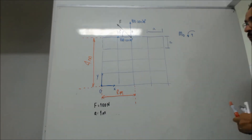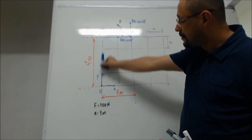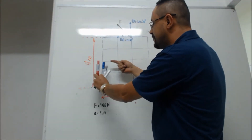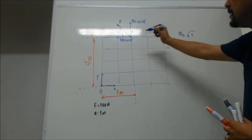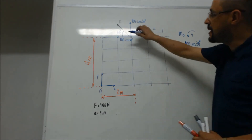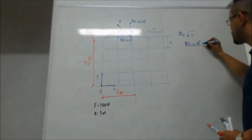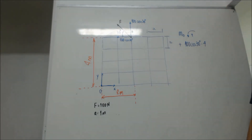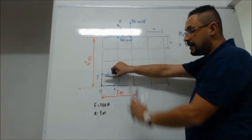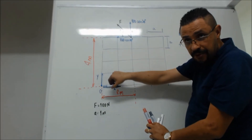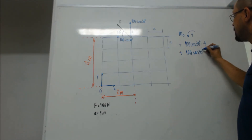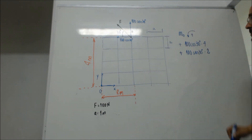Então, olha bem. Pega o ponteiro do relógio, coloca preso no ponto. Pega a força agora e tenta girar o ponteiro do relógio. O que ele vai fazer com o ponteiro do relógio? Girar no horário ou no anti-horário? Anti-horário. Sem cosseno de 30. Vê-se a distância dela — qual é a distância dela? Quatro metros. E ela é positiva porque está girando anti-horário. Pega o ponteiro do relógio de novo, preso aqui. A força agora é essa. O que ela vai fazer? Anti-horário também. Mais cem seno de 30 vezes a distância. Qual é a distância dela? Dois.